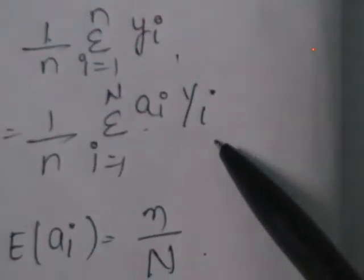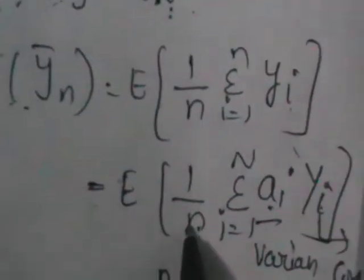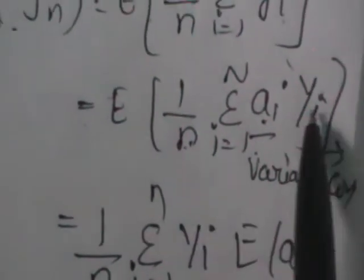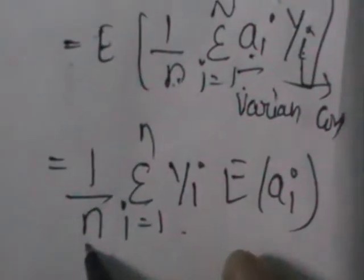You get 1 by n, sigma i equals 1 to N, y_i times E(a_i). What is E(a_i)? E(a_i) is nothing but n by N. With respect to the summation running on i, this term n by N is independent of i, so we can take it out of the summation.